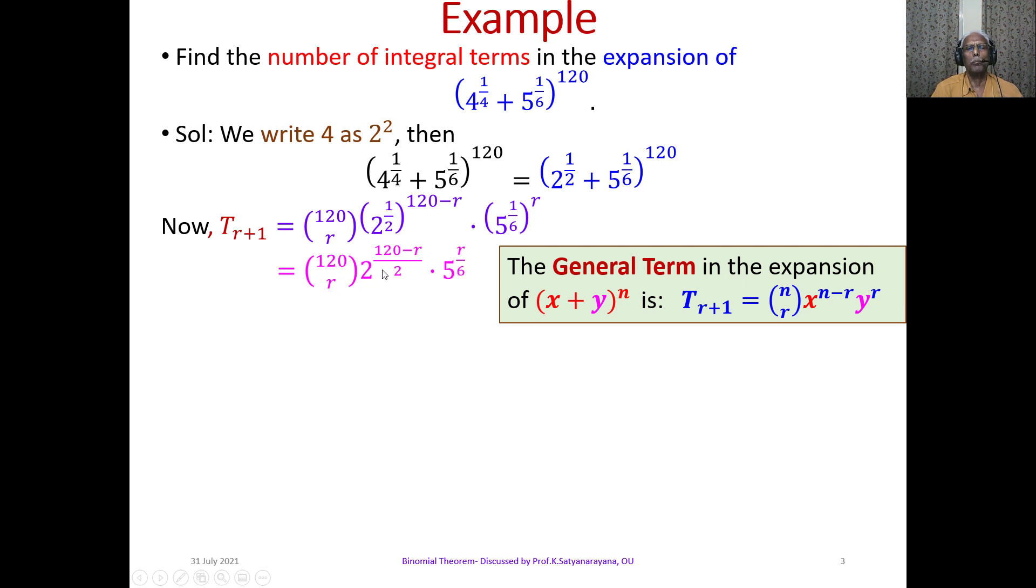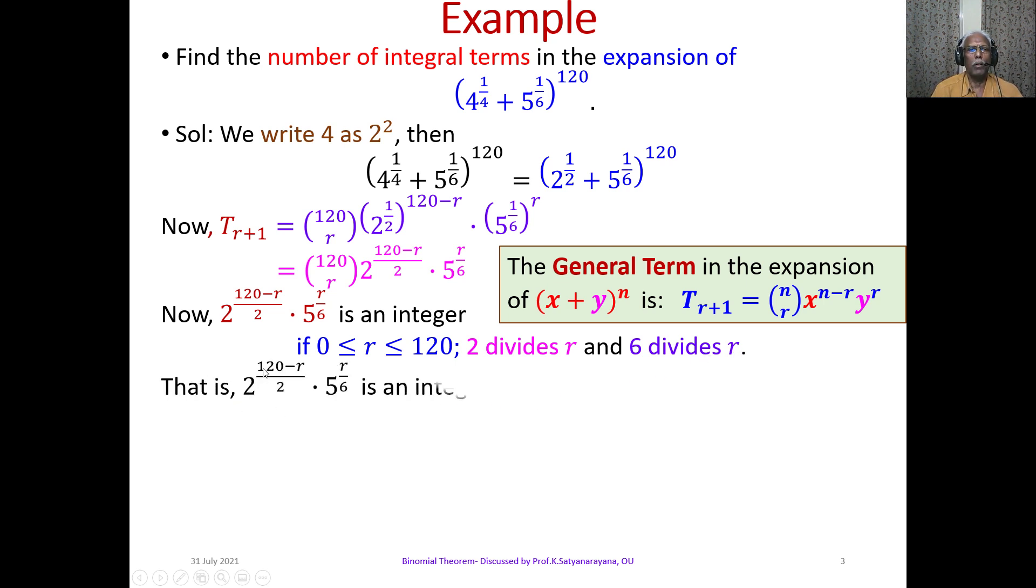Now, 2^((120-r)/2) × 5^(r/6) is an integer if 0 ≤ r ≤ 120, 2 divides r and 6 divides r. That is, r is a multiple of 6 and 6 divides r.